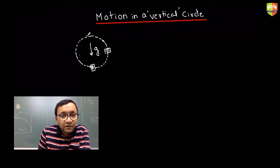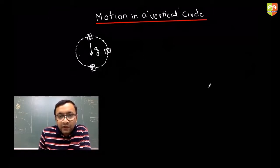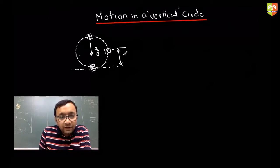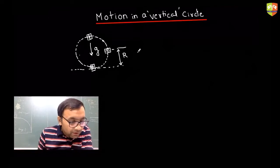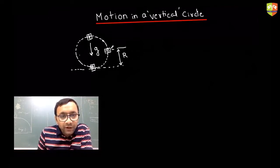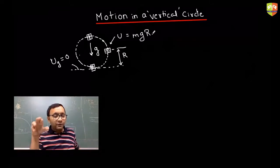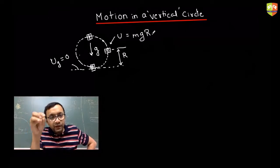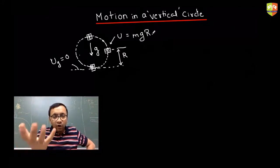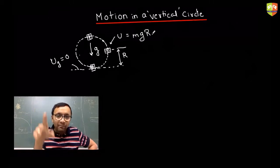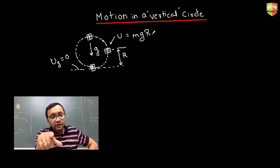If there is an object that moves in a vertical circle, its potential energy will change. If this is the level where gravitational potential energy is zero, then the height of the object is changing. At a quarter circle point, the height is r, so potential energy becomes mgr. This makes vertical circle motion special because the potential energy also changes, unlike horizontal circle motion where height stays constant.